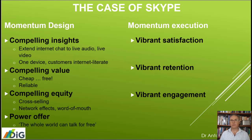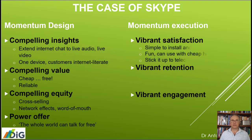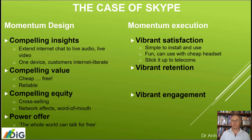The power offer was effectively that the whole world can talk for free. So that's on the design side. Let's have a look at the execution. Vibrant satisfaction — certainly simple to install and use, fun, you can use it even with a cheap headset. You can stick it to the telecoms. I've talked about financial institutions being at risk of disruption — certainly it's the case with telecommunications companies. Big monopoly companies can lose sight of their customers, and if we have an opportunity to get away, we love the freedom. Vibrant retention — we're looking at heavy uses of broadband, it's easy once installed, and you can use it for incoming as well as outgoing calls.